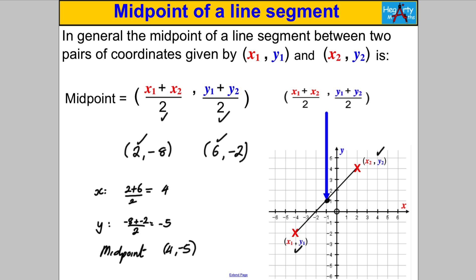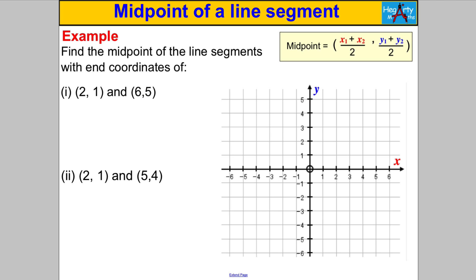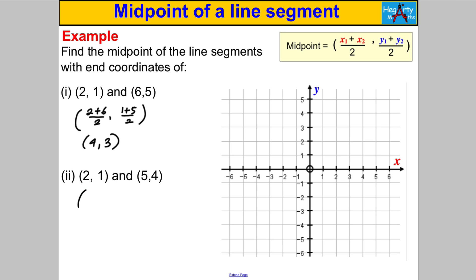Now we're ready to try some. Pause the video and try it yourself. Find the midpoint of the line segment with end coordinates (2, 1) and (6, 5). To get the x-coordinate: 2 + 6 divided by 2 = 8 ÷ 2 = 4. To get the y-coordinate: 1 + 5 divided by 2 = 6 ÷ 2 = 3. The midpoint is (4, 3).